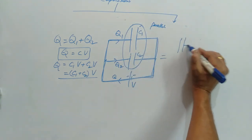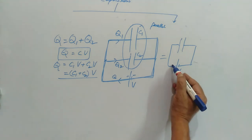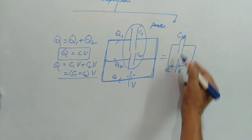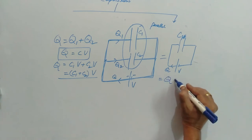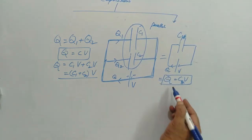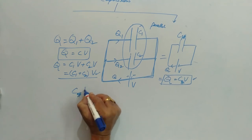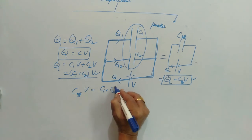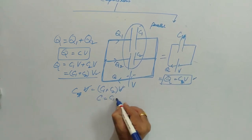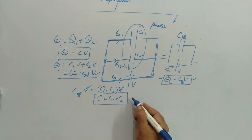If we replace these two capacitors with a single capacitor of effective capacitance C_eff connected to the same cell with the same potential difference V drawing the same charge Q, then Q = C_eff · V. Comparing the two equations: C_eff · V = (C1 + C2) · V. Cancelling V gives C_eff = C1 + C2. So in parallel, the capacitances add up.